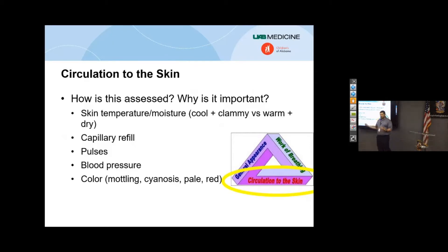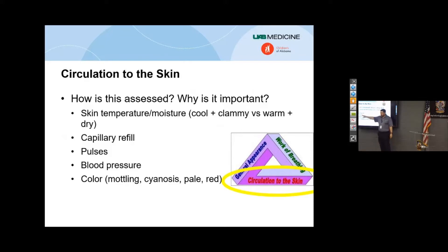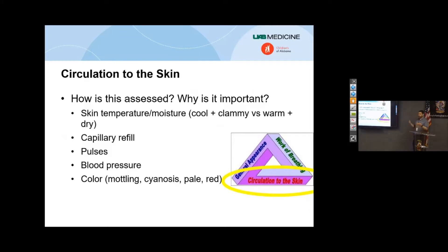Blood pressure in kids I take with a grain of salt — how easy is it to get an accurate blood pressure on a kicking, screaming one-year-old in the field? So I'm more concerned about heart rate, pulse strength, and capillary refill, because those give me far more information about circulatory status than blood pressure does. And then their color — are they mottled, are they cyanotic? Being blue is never good for anyone. It's a bad sign.